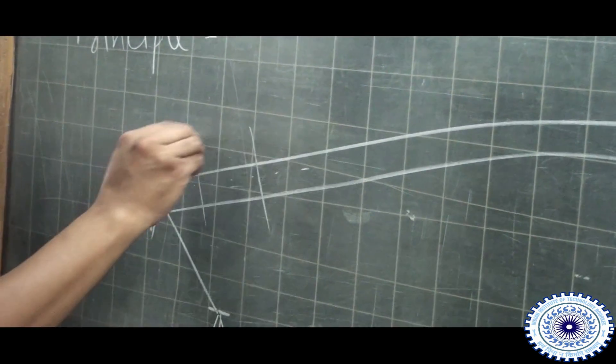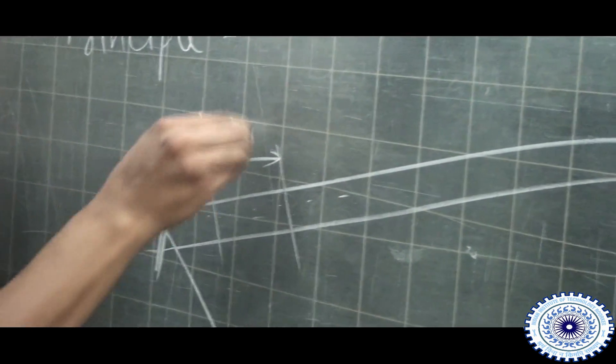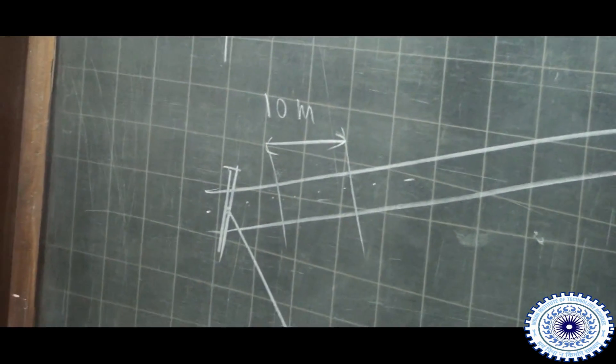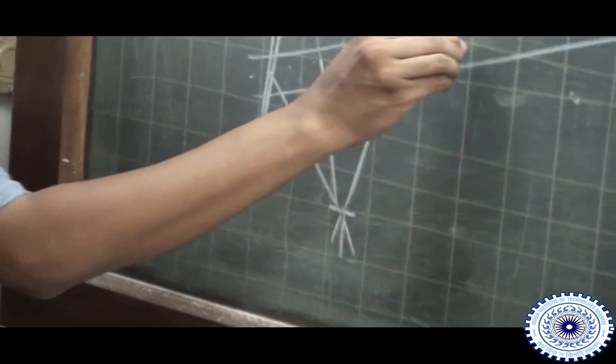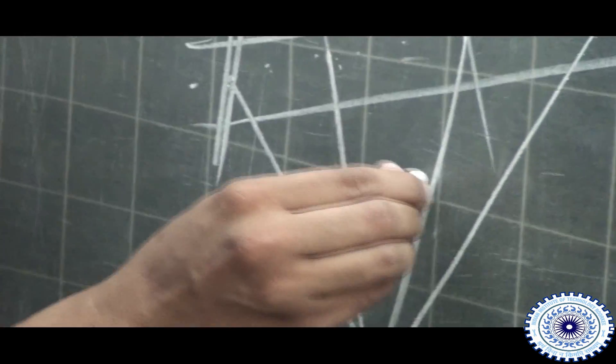we will identify the sections at a specified length. It may be 10 meter or 20 meter depending upon how many points you want to take. At every interval from the same location of the level, we will take sightings. So you can say it is sight number 1, 2, 3, 4.